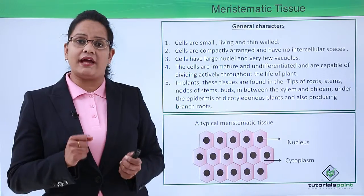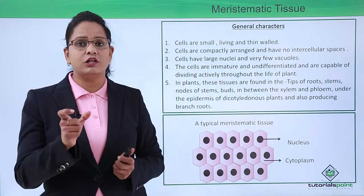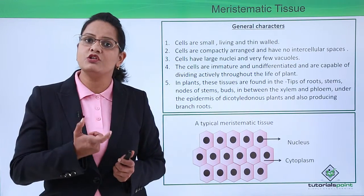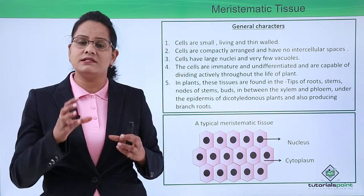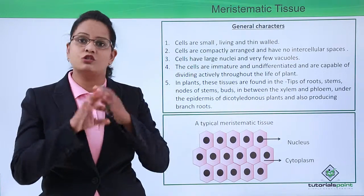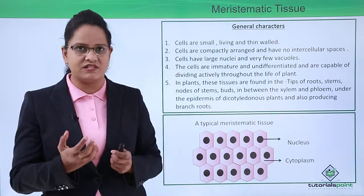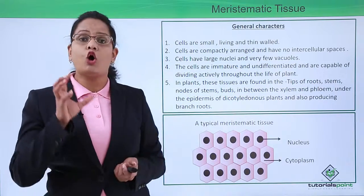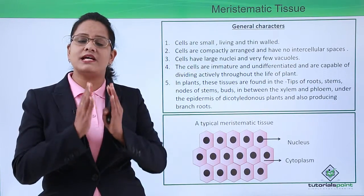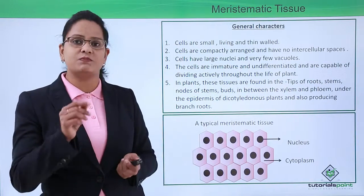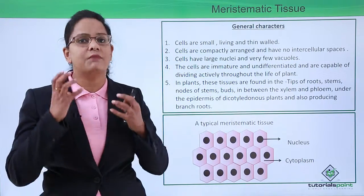The cells have large nuclei and the vacuoles are very less. The reason for vacuoles being less is because the function of vacuoles is to store substances, and these needs are not present in the meristematic tissue — there is no need to store substances. They just need to continuously divide and form a mass of cells. They are compactly arranged with no intercellular space in between them. Division is the sole function, and that is the reason they have a bigger nucleus.